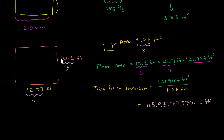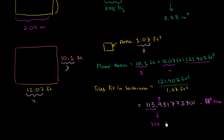So our final answer can only have three significant figures. We get 113.931775701..., and since we need three significant figures, we round to the nearest whole number. The next digit is 9, so we round up to 114. The units here are tiles — feet squared divided by feet squared. So the answer is 114 tiles. Obviously it won't be exactly 114, but based on the precision of our measurements, we can say 114 tiles.